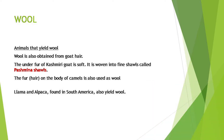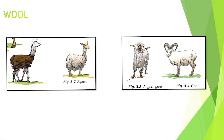The under-fur of Kashmiri goat is soft and is woven into fine shawls called Pashmina shawls. The fur on the body of camels is also used as wool. Llama and alpaca, found in South America, also yield wool.